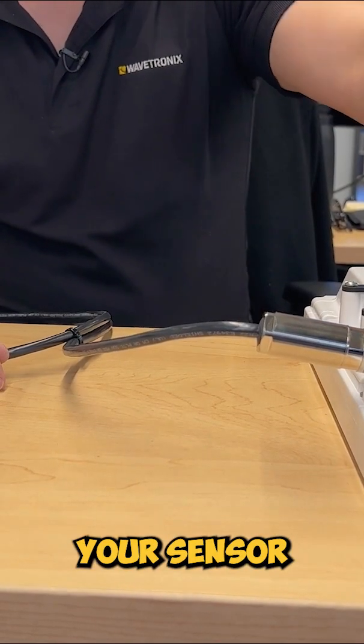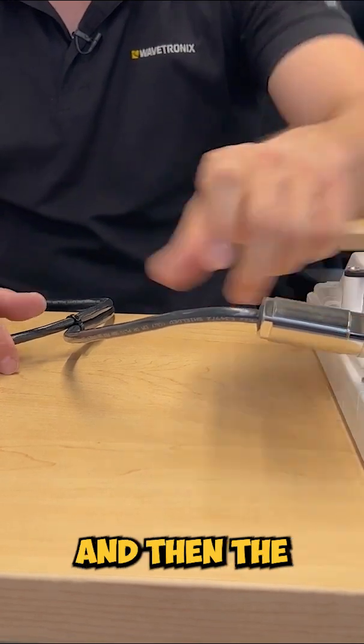So you've got your sensor, which is an XP20, your expanse link connector, and then the expanse link cable.